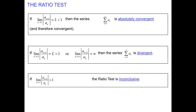Ratio test. The ratio test in general is quite helpful to test absolute convergence, and we know that absolute convergence implies convergence. That means it is quite a strong tool. We have to take the formula of the infinite series, like a_n, and we have to create a limit — calculate the limit at infinity of the ratio a_{n+1} over a_n.